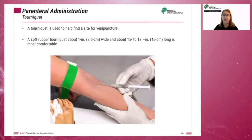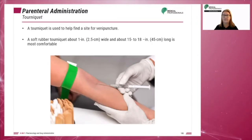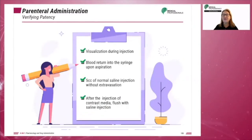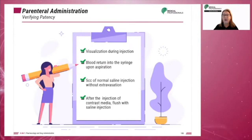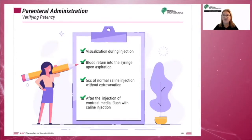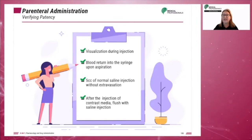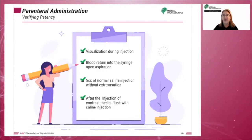The tourniquet is not removed during blood draw procedures. Before injecting any contrast, you must verify patency — meaning you are in the vein. This can be confirmed by visualization, but is verified when blood returns into the syringe upon aspiration. It should also be possible to inject 5 cc's of normal saline without extravasation. After the injection of contrast media, the vein should be flushed with a saline injection.